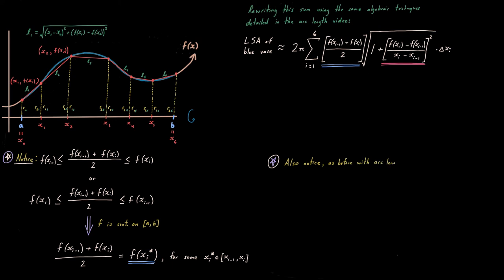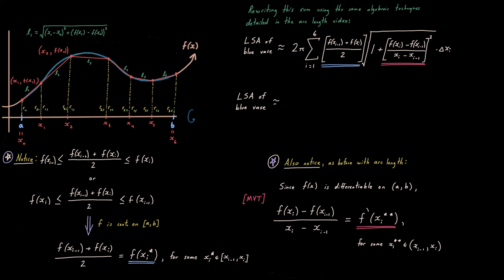And this second thing is just what we did in the arc length video. As before, with arc length, since we know that this function, again, it's a differentiable, smooth, continuous function, it's differentiable on a, b, open interval a, b, the slope of that secant line right there, connecting the two points, x sub i minus 1, f of x sub i minus 1, and x sub i, f of x sub i, has to equal f prime of x sub i double star, because I already used single star. For some x value, x sub i double star inside that open interval, x sub i minus 1, x sub i. It's just the mean value theorem for derivatives. And again, I had to use x sub i double star because I already used x sub i single star for the average that you see there on the right or the left. And it might not be the same x coordinate, right? They're probably not. In any case, I substitute those values in where you see the blue underlined term and the red underlined term.